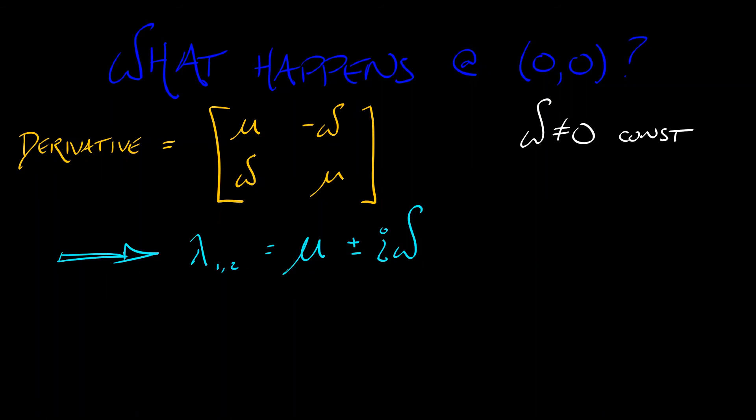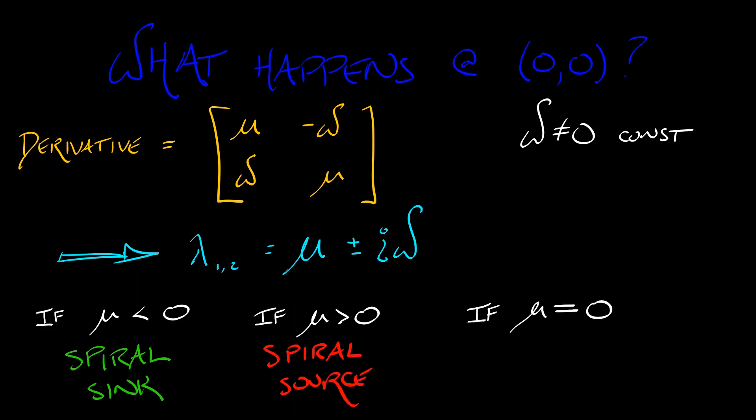Now, from this, it is clear what is happening at the origin. If mu is negative, then the real part of this eigenvalue is negative. We have a spiral sink. If mu is positive, then we have a spiral source. And if mu equals zero, then we have a pure imaginary pair of eigenvalues. And that is, of course, a center.